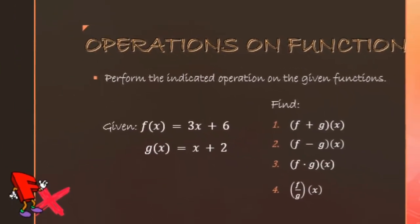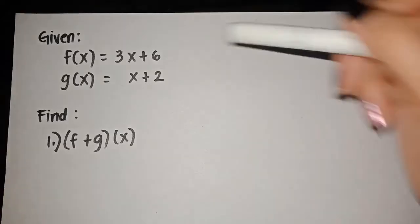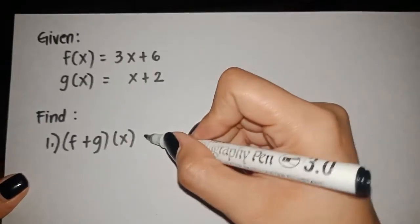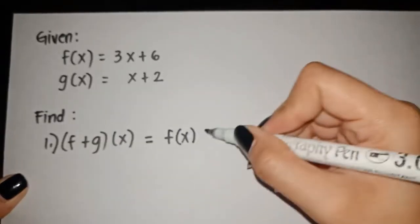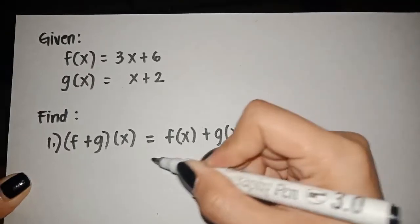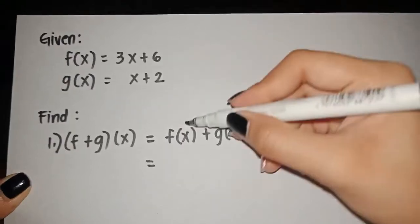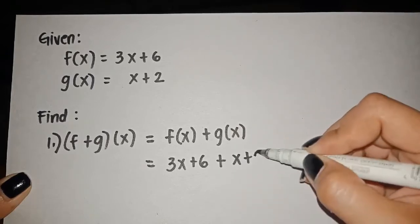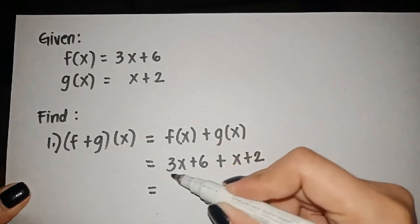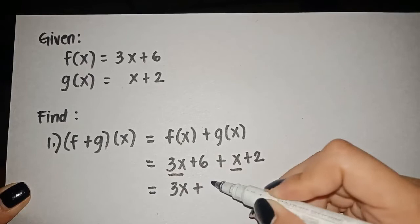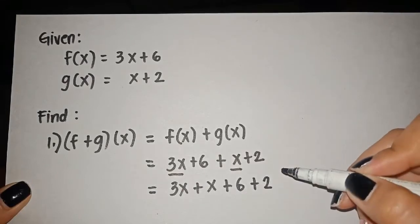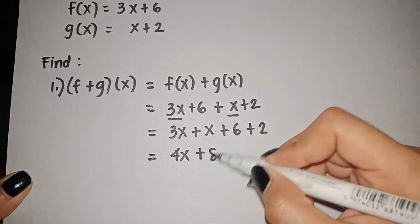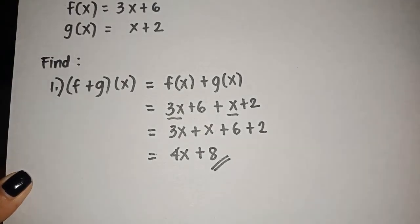Let's try to perform the indicated operations on the given functions f(x) = 3x + 6 and g(x) = x + 2. For addition, (f + g)(x) = f(x) + g(x). Substituting: (3x + 6) + (x + 2). Combining similar terms, we have 3x + x plus 6 + 2 as the constant, giving us 4x + 8 as the final answer.